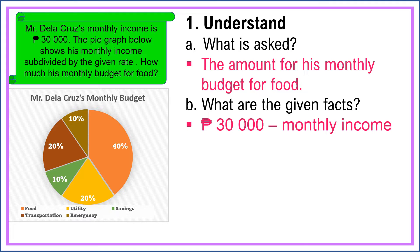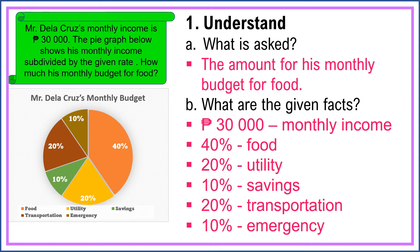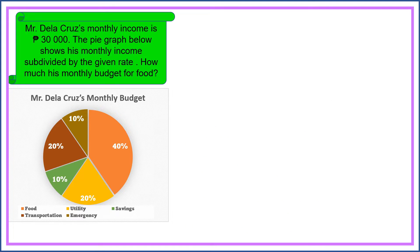Next, we should also know what the given facts are. The given facts in this problem are: thirty thousand pesos monthly income, forty percent for food, twenty percent for utility, ten percent for savings, twenty percent for transportation, and ten percent for emergency. We already understand the problem.